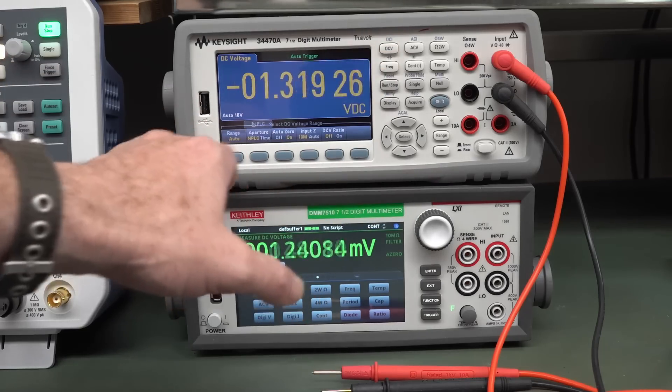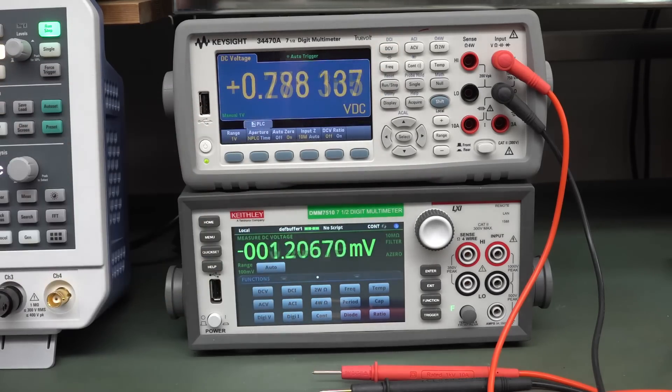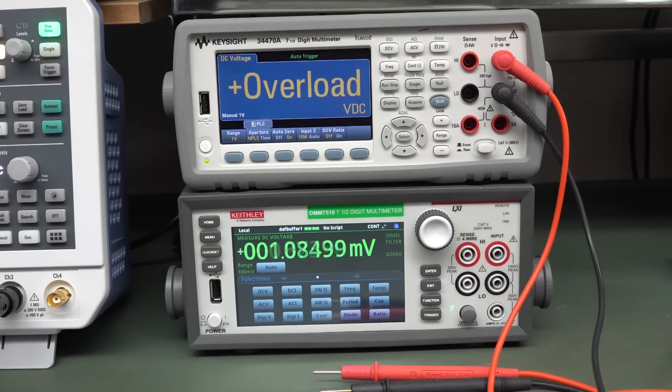And it might charge up because you've effectively got infinite input impedance. But if we manually range it like this, look, on the one volt range, we're getting overload, overload, overload. What? What's going on?